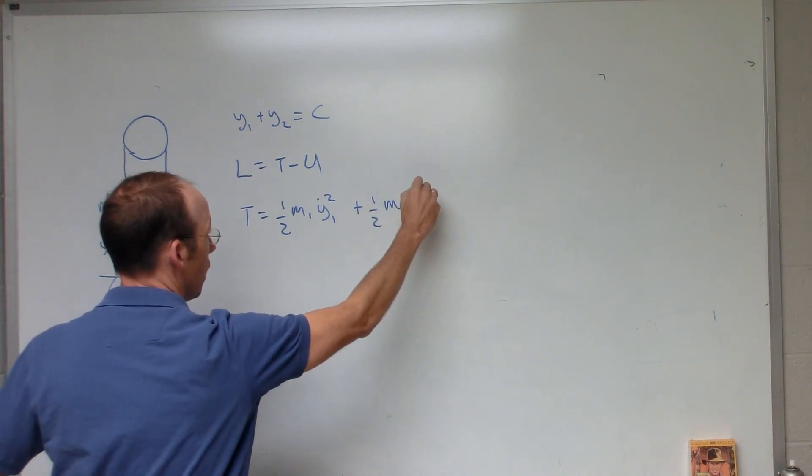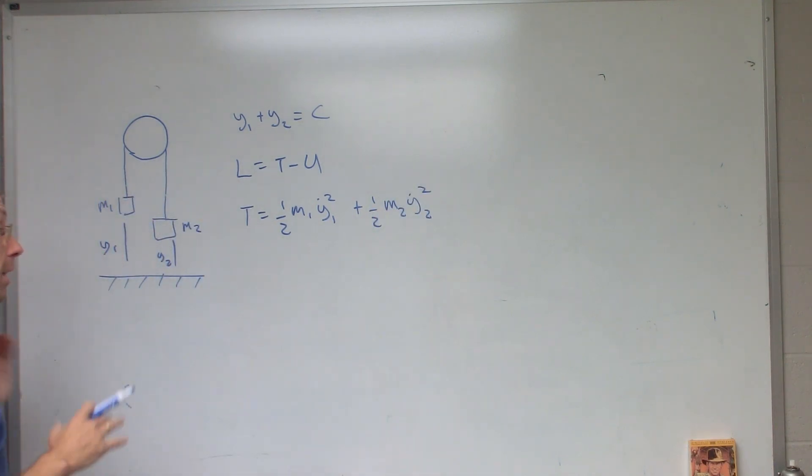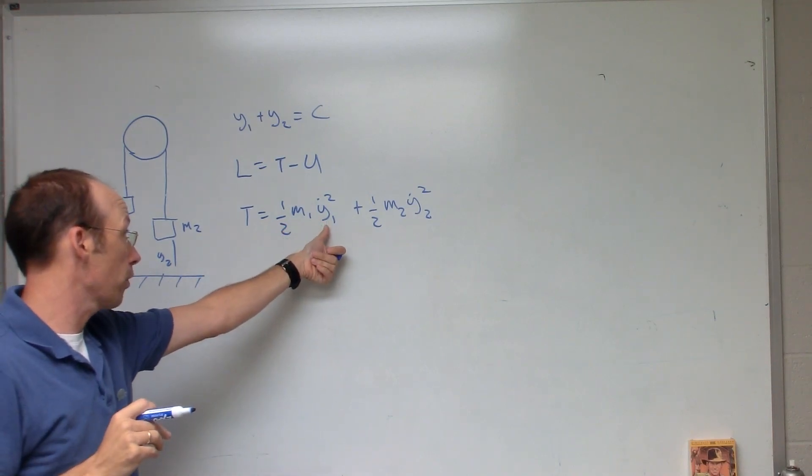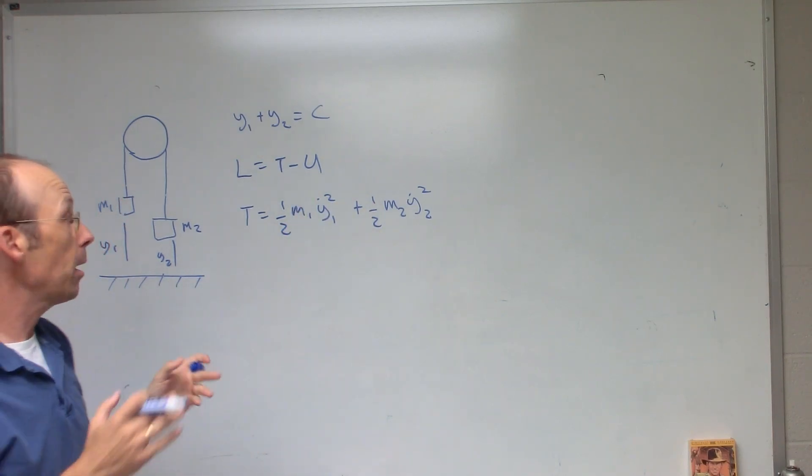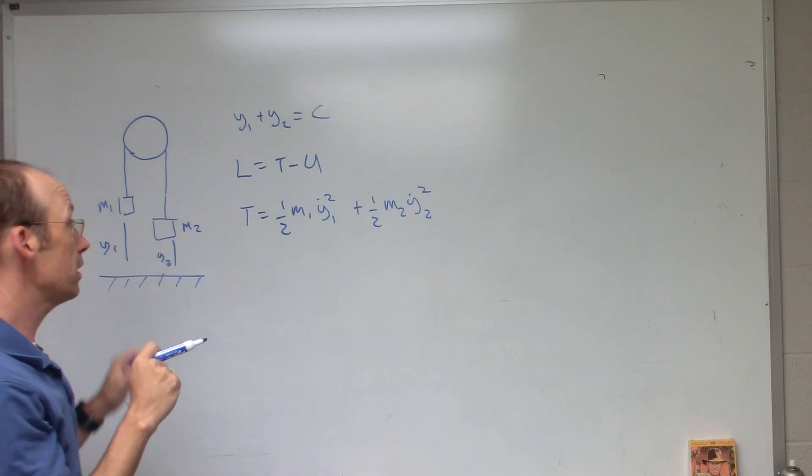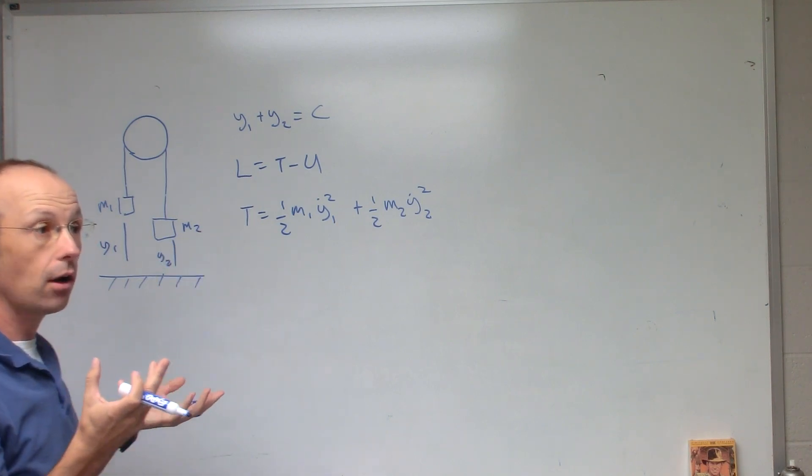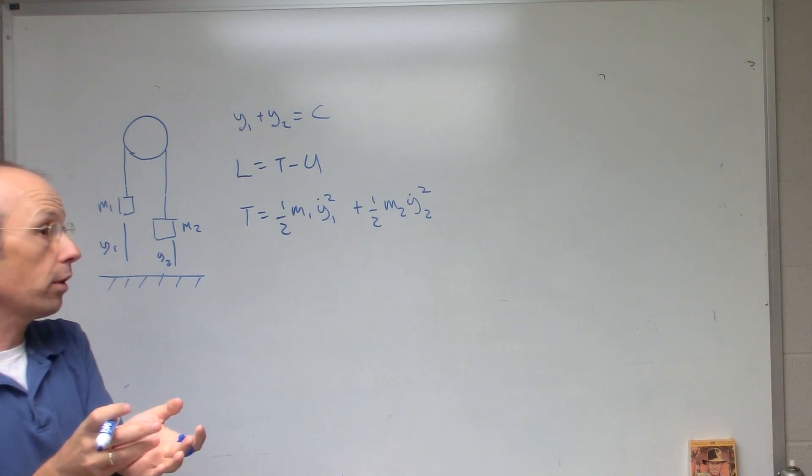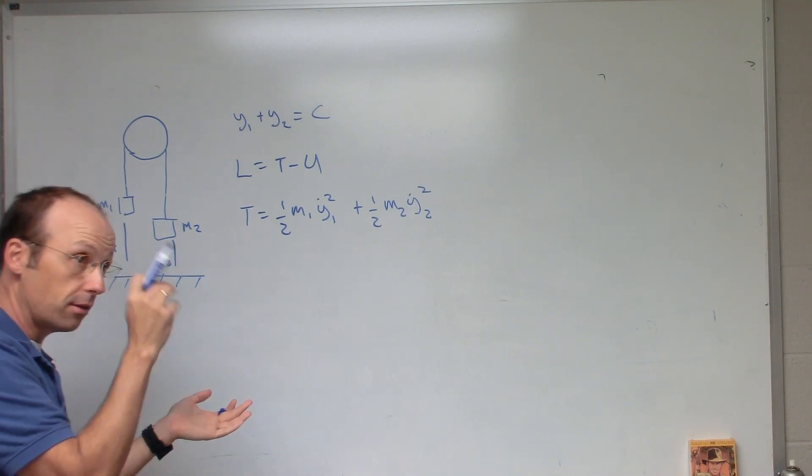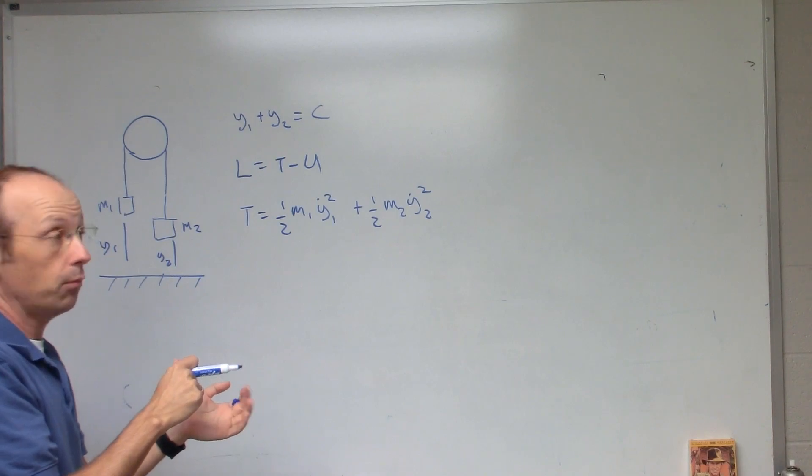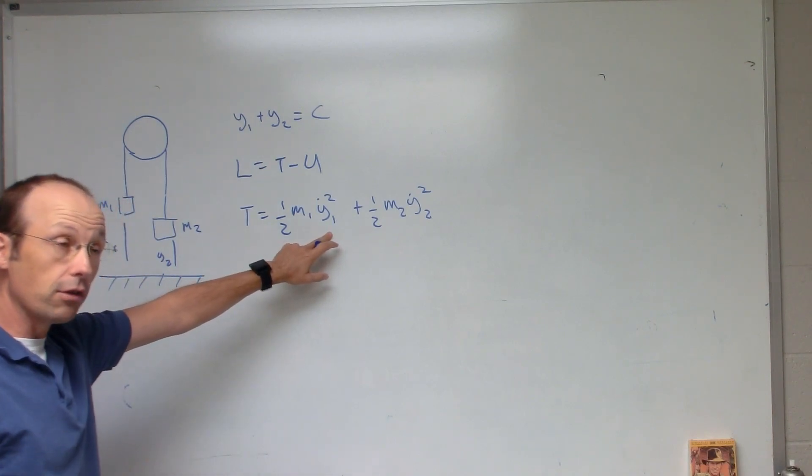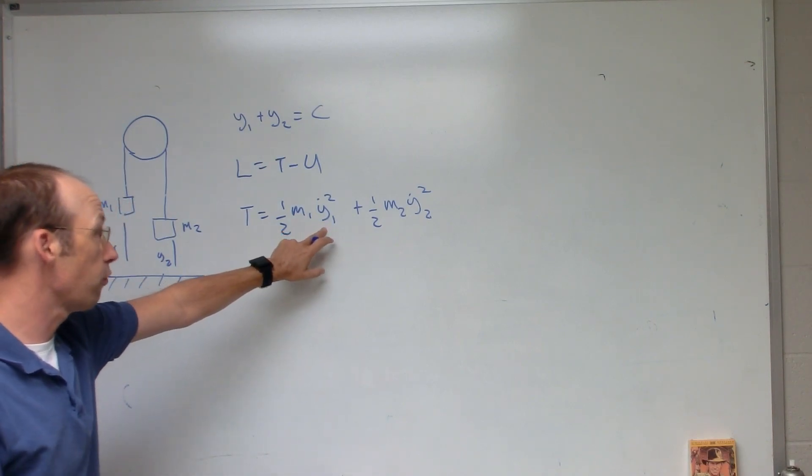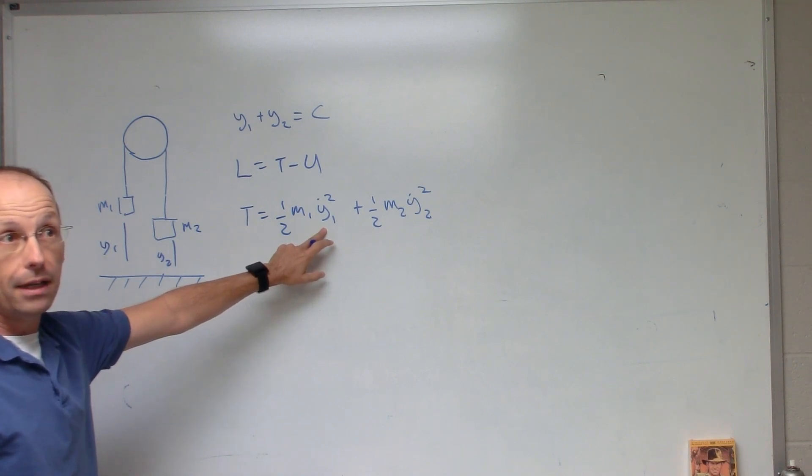But again, this has the coordinates Y1 and Y2. I don't want that. But I'm doing it this way so you can see how we go from more than one generalized coordinate to reduce it to only what we need. Sometimes we need to write the kinetic energy in terms of real coordinates. It's just easier that way.